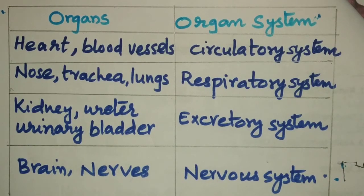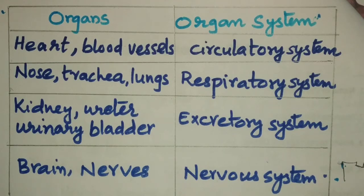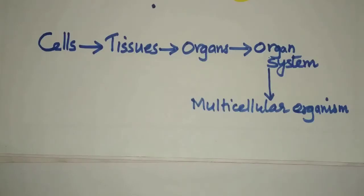No organ system can function independently. A given physiological activity can be completed only by the combined action of different organ systems. We have understood that cells combine to form tissues, tissues combine to form organs, and organs combine to form organ systems.